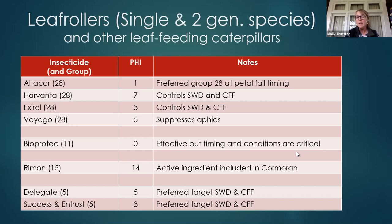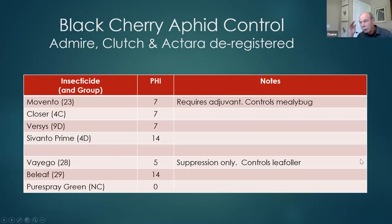Last year there were questions about whether fruit worm was being found in traps. Our initial look at some of those traps suggested they were not what we were thinking they might be. The other pest to touch on that is coming up soon as far as control is black cherry aphid.